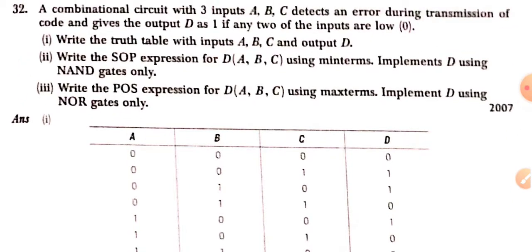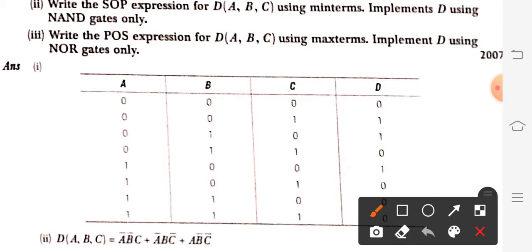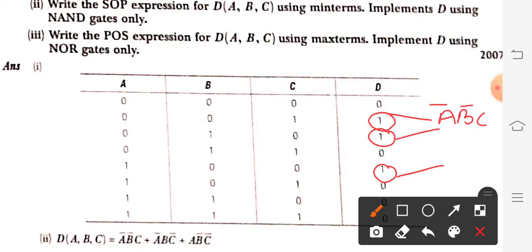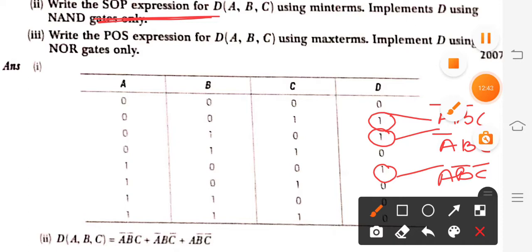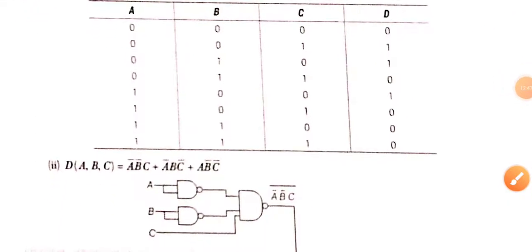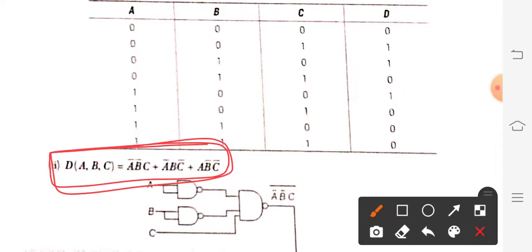For the SOP expression using minterms, we generate minterms for output entries of 1. The minterm for the first 1 (row 0,0,1) is Ā·B̄·C. For the second 1 (row 0,1,0) it is Ā·B·C̄. For the third 1 (row 1,0,0) it is A·B̄·C̄. Merge these using the plus operator to get D = Ā·B̄·C + Ā·B·C̄ + A·B̄·C̄. This is your SOP expression using minterms.